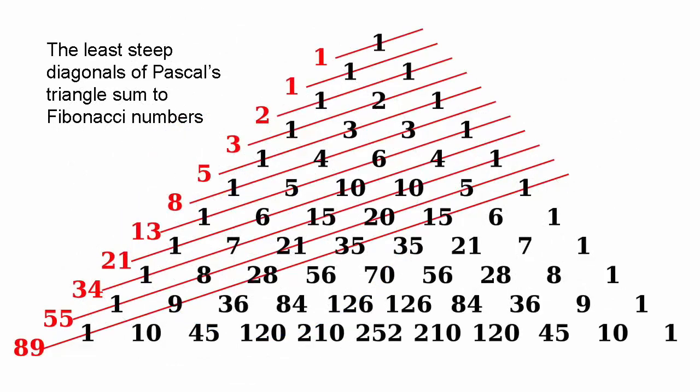Fibonacci numbers have so many interesting mathematical properties that an entire journal, the Fibonacci Quarterly, is devoted to them. The sequence of final digits in Fibonacci numbers repeats in cycles of 60. The last two digits repeat in 300, the last three in 1500, the last four in 15,000, and so on. The product of any four consecutive Fibonacci numbers is the area of a Pythagorean triangle. The shallow, or least steep, diagonals of Pascal's triangle sum to Fibonacci numbers.